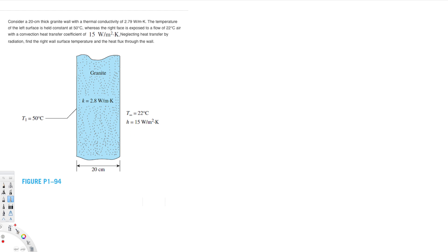Let's do this problem. The question asks: consider a 20 centimeter thick granite wall with a thermal conductivity of 2.79 watts per meter Kelvin. The temperature of the left surface is held constant at 50 degrees Celsius, whereas the right face is exposed to a flow of 20 degrees Celsius with a convection heat transfer coefficient of 15 watts per meter squared Kelvin. Neglecting heat transfer by radiation, find the right wall surface temperature and the heat flux through the wall.